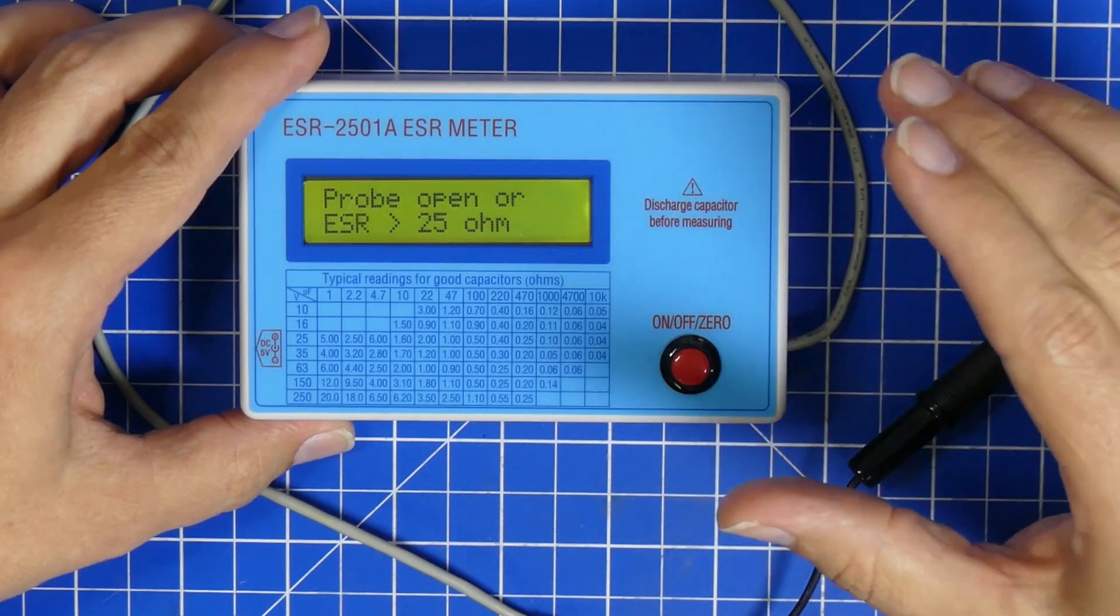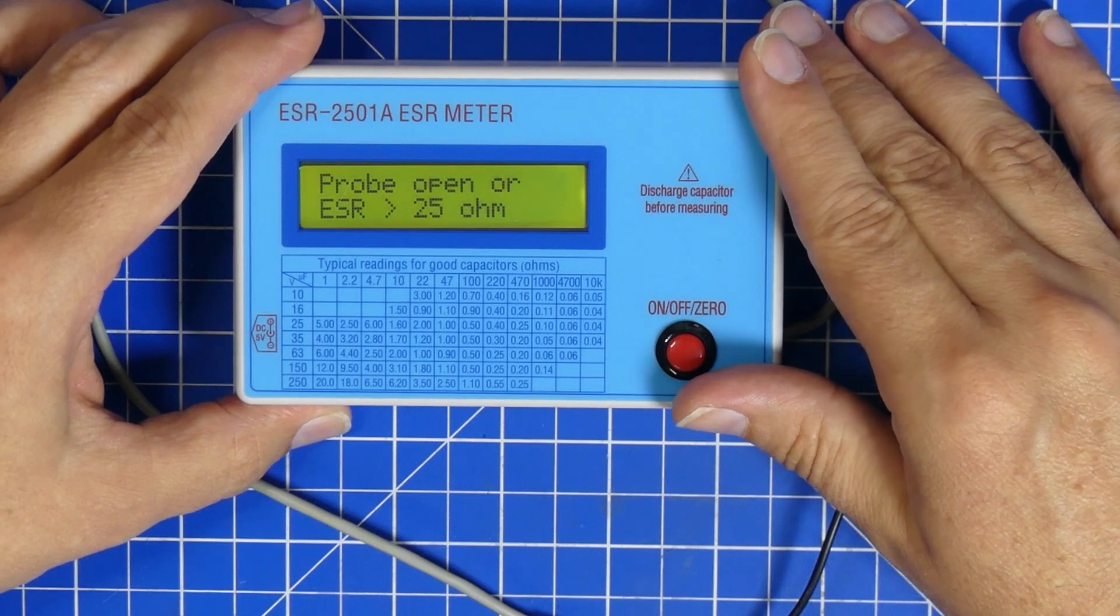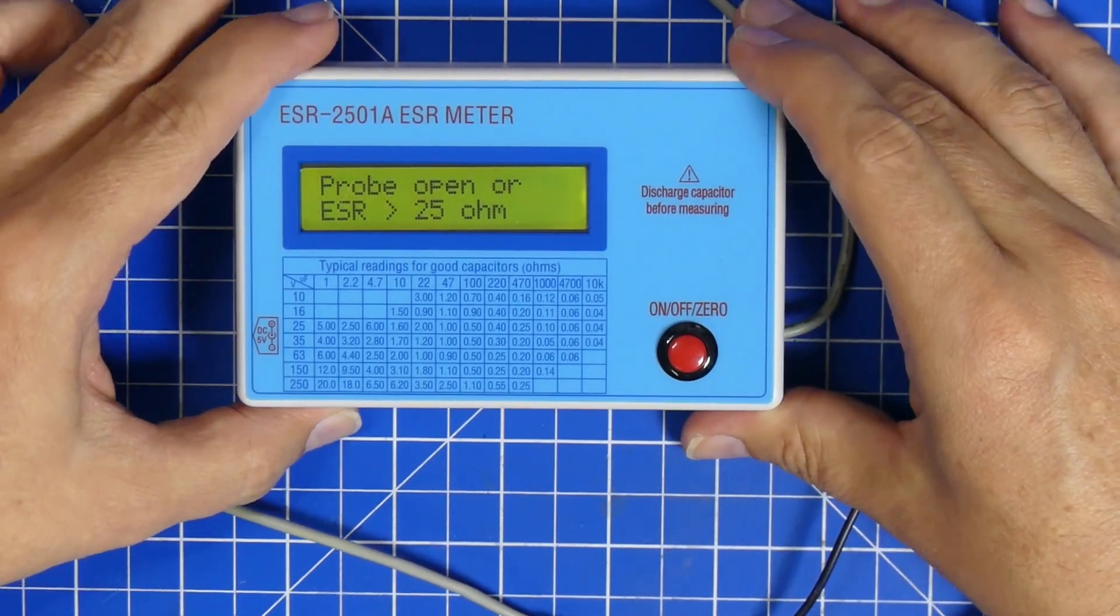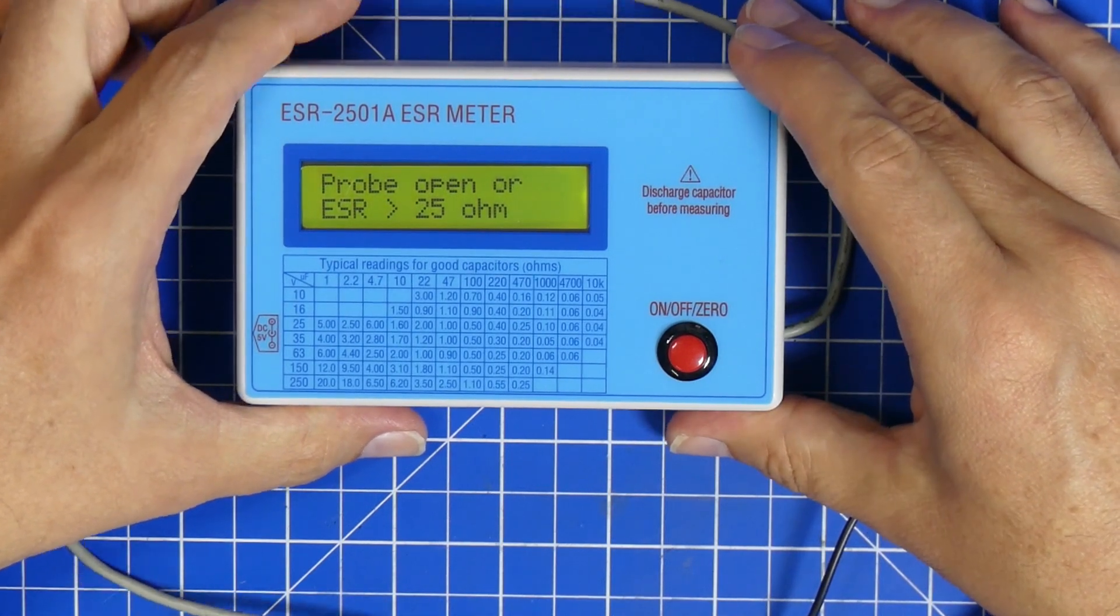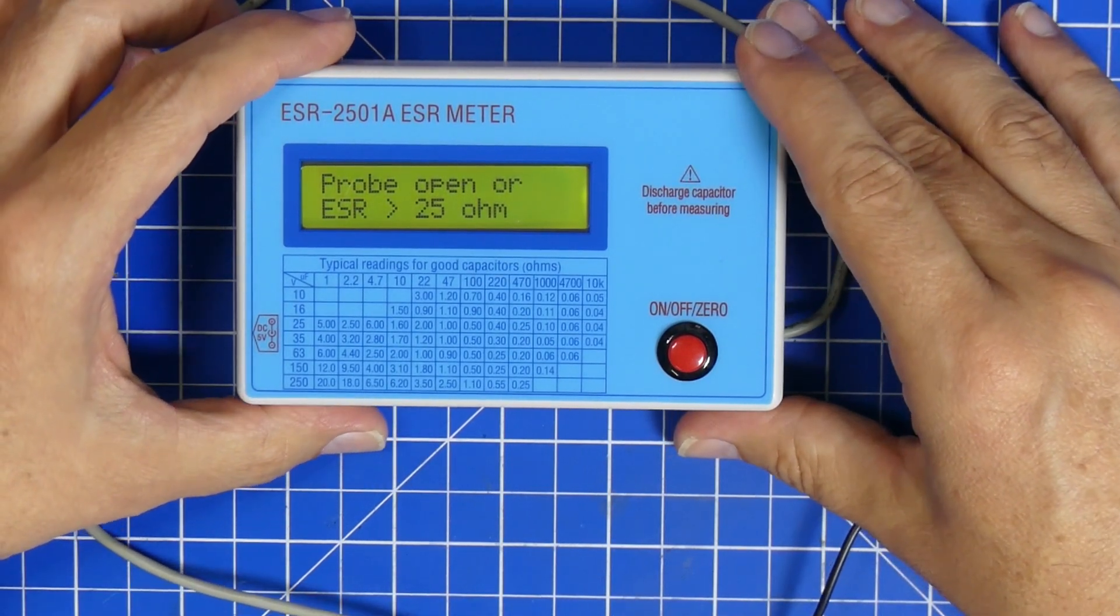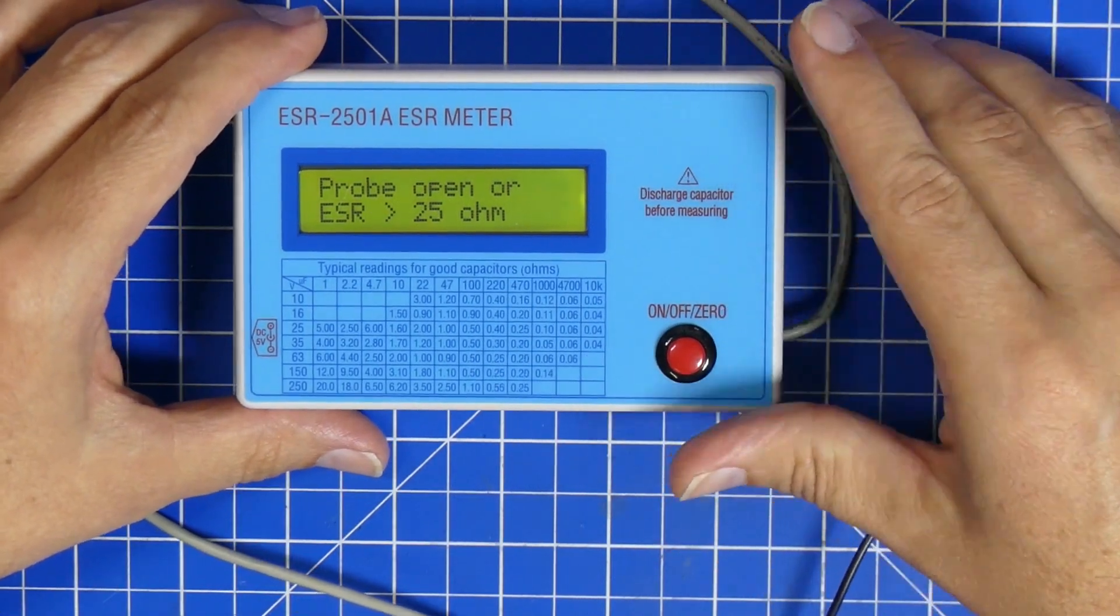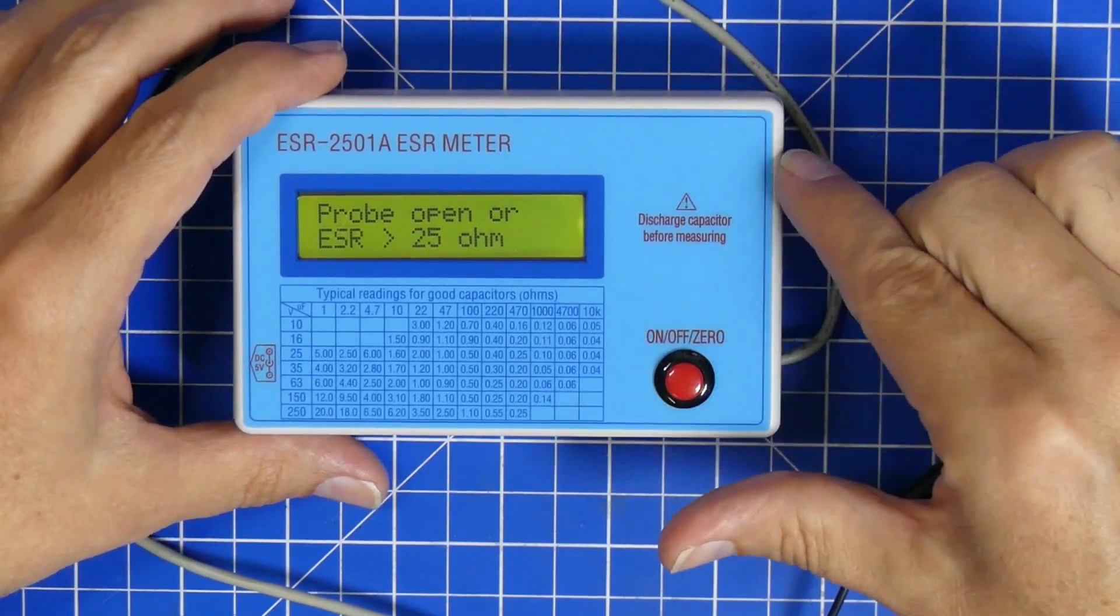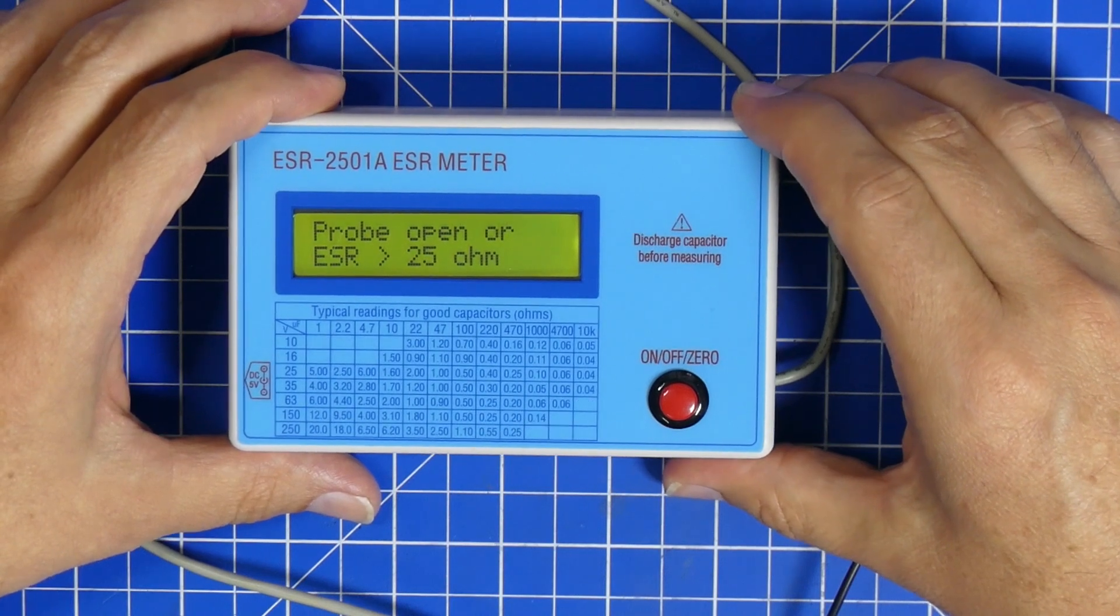They can really make the job of finding a broken capacitor really simple without having to take out all of them or look for leakage or domes, or sometimes not knowing what to look for at all. Just check the capacitors and you'll find a broken one. This is one of those tools that I really love and I'm really happy that I have.